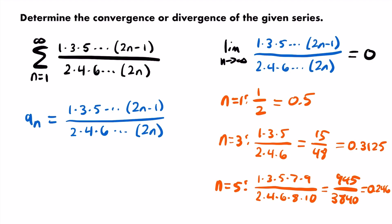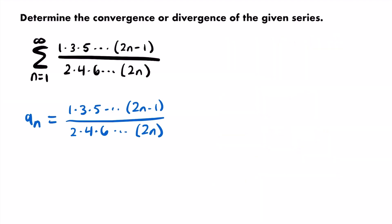Since the limit as n approaches infinity of our sequence is 0, the divergence test is inconclusive — we can't say it diverges or converges. The divergence test fails here, though it's always good to check first since a non-zero limit would immediately give divergence. We also consider the integral test, but this sequence wouldn't be a nice expression to integrate, so we'll set that aside.